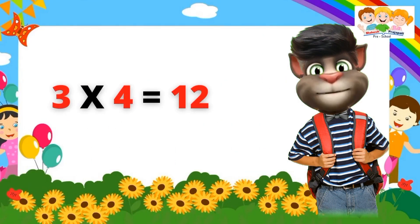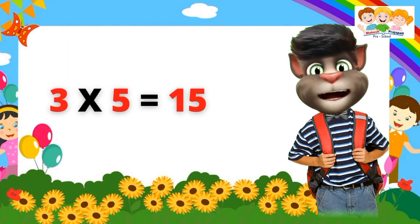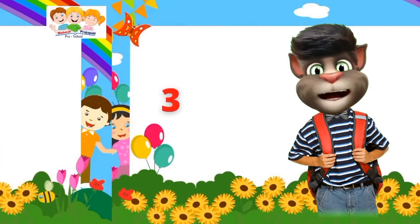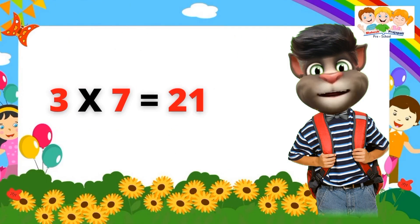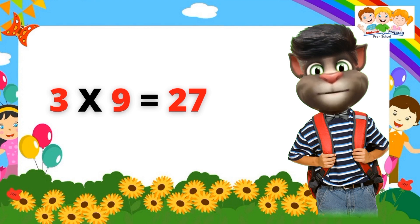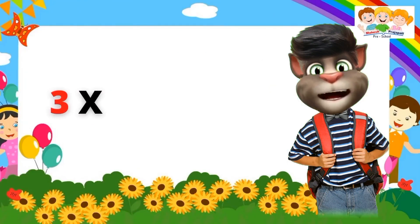Three fours are twelve. Three fours are twelve. Three fives are fifteen. Three sixes are eighteen. Three sixes are eighteen. Three sevens are twenty one. Three eights are twenty-four. Three nines are twenty-seven. Three tens are thirty.